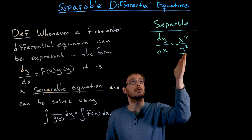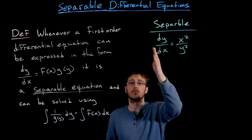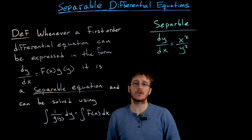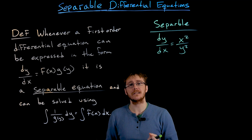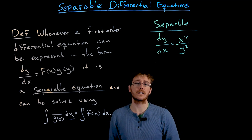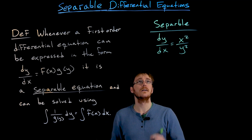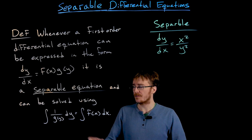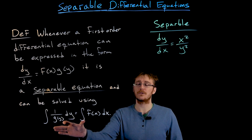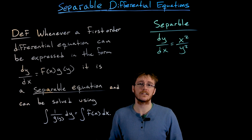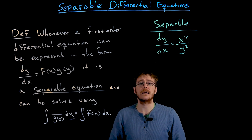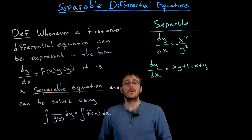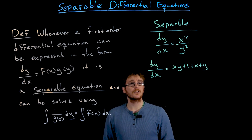The idea is: can we move everything with y over to one side of our equation and everything with x over to the other side, all while having these pieces multiplied by the appropriate differential — dy for the y pieces and dx for the x pieces — so that we can eventually rewrite the differential equation in a form we can integrate? This might not always be a very straightforward thing to do.